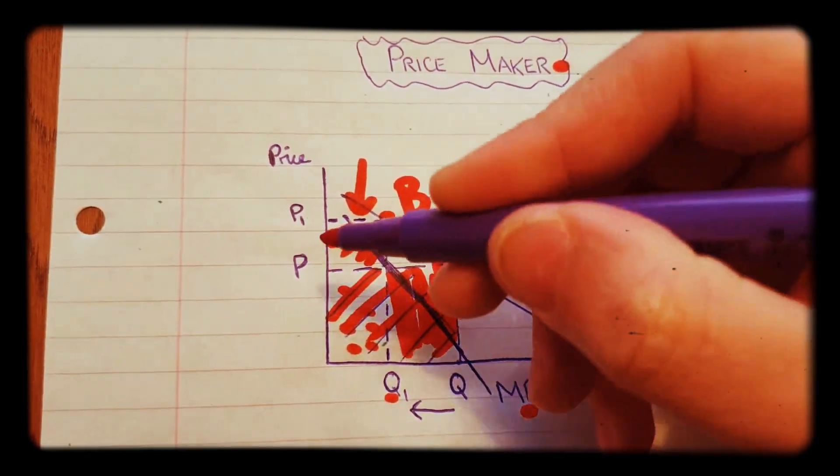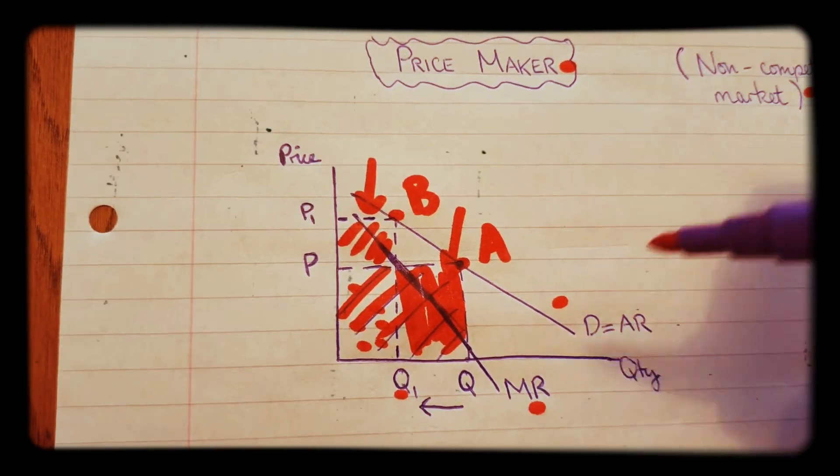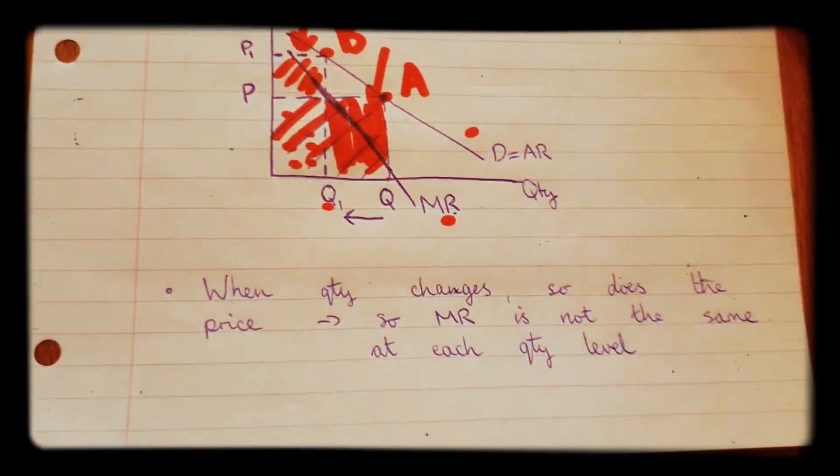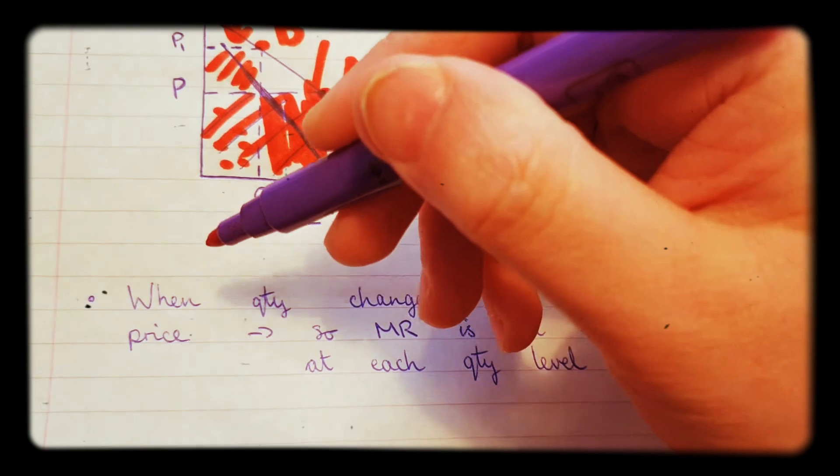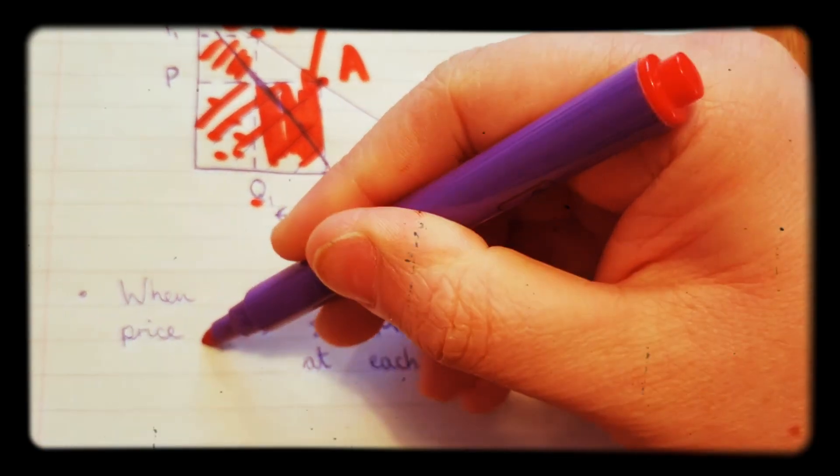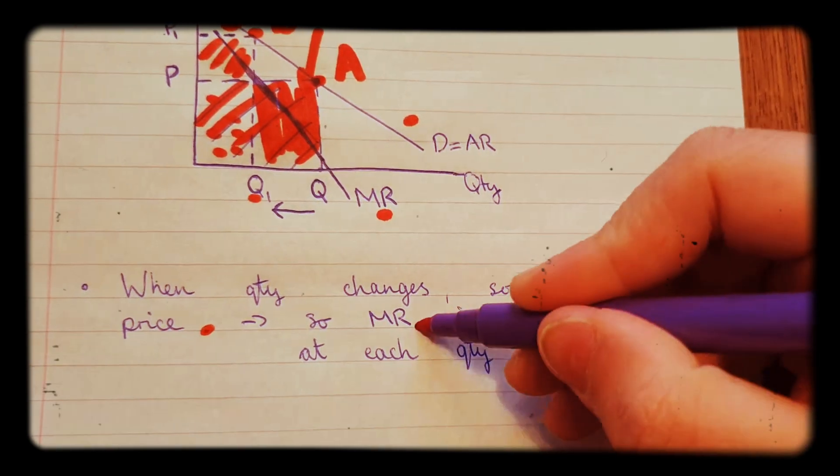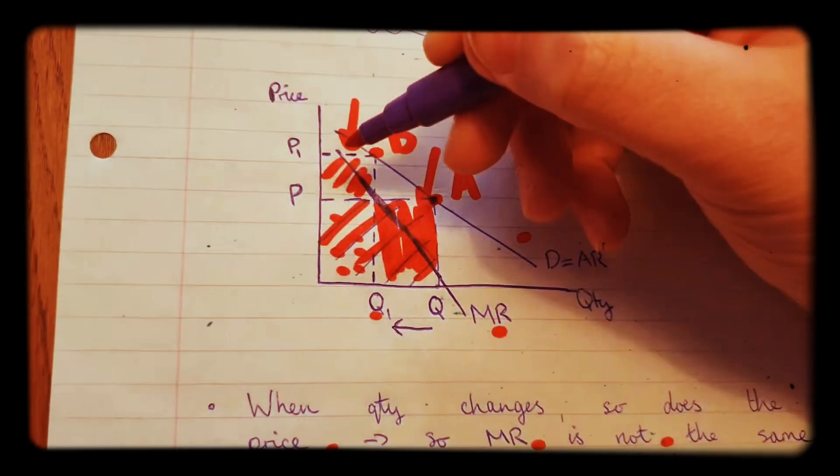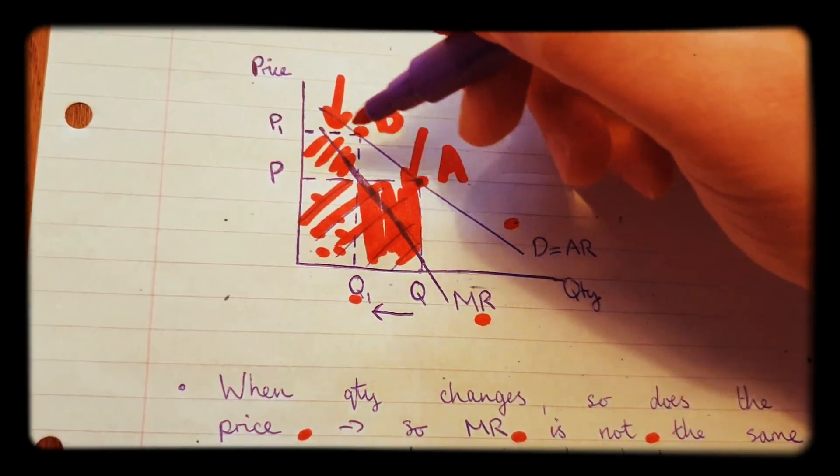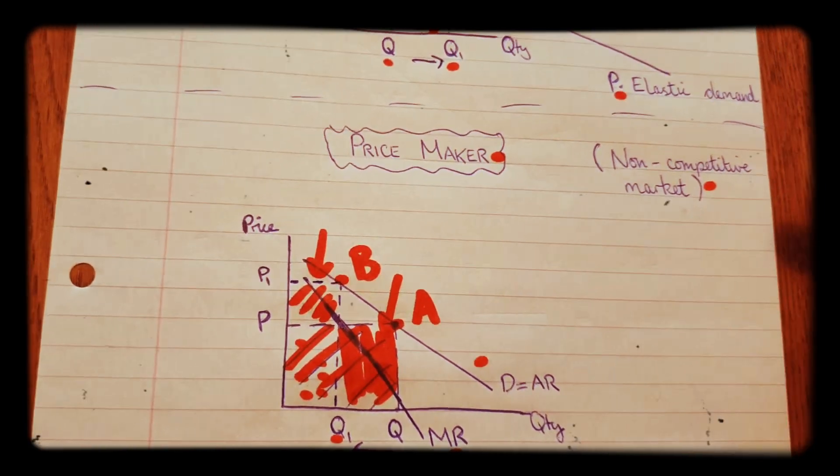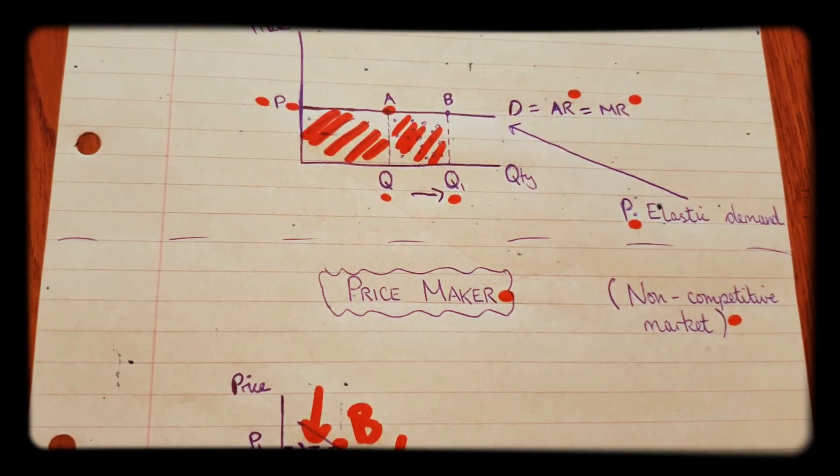At different quantity levels there are different prices, so the marginal revenue cannot be the same as the average revenue. I'll say that again. When quantity changes, so does the price. So the marginal revenue is not the same at each quantity level, which is why you draw a marginal revenue curve and an average revenue curve separately. I hope that made sense. Any questions, leave it in the comments section below.